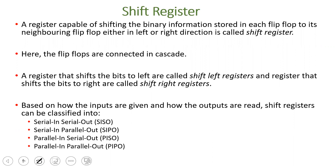Based on how you provide input and how you retrieve the data, registers are classified into 4 types. If input is given serially, it is Serial In. If data is retrieved serially, it is Serial Out. If input is given in parallel, it is Parallel In, and parallel retrieval is Parallel Out. So based on this, there are 4 classifications. The type we will talk about in this video is SISO.